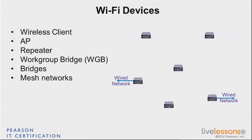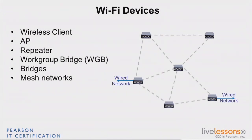But if they do not have communication through the wired network, they are going to use their radio to find other access points that have a path to one of the access points with a wired network connection. So you create a sort of mesh communication between these APs and those that have a wired network connection.